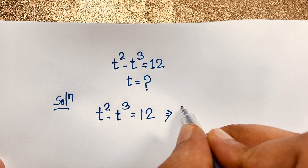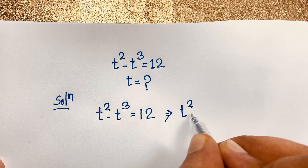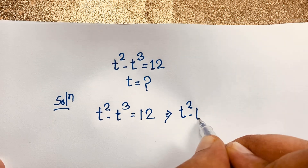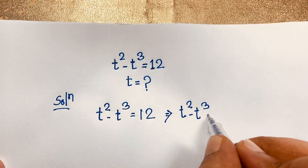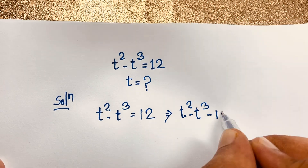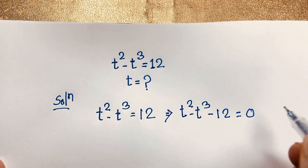Here, t to the power 2 minus t to the power 3 — if I move this 12 to this side, it will be t to the power 2 minus t to the power 3 minus 12 is equal to 0.